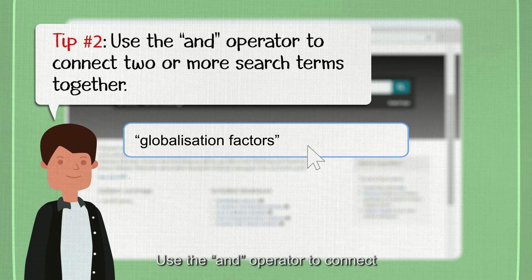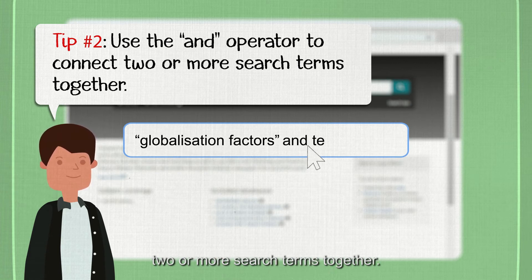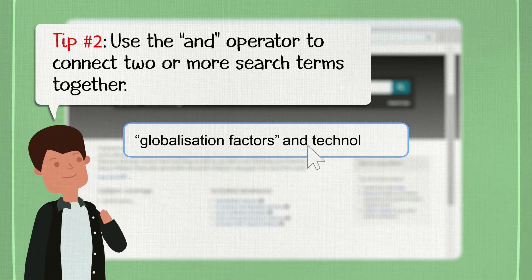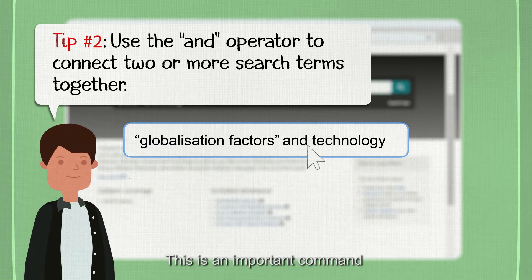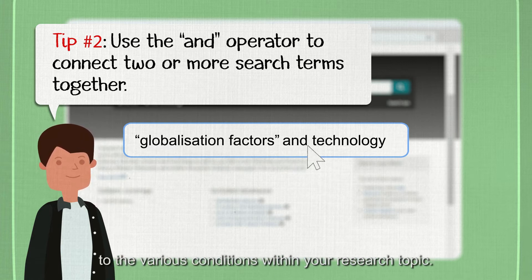Use the AND operator to connect two or more search terms together. This is an important command as you can get search results which are relevant to the various conditions within your research topic.